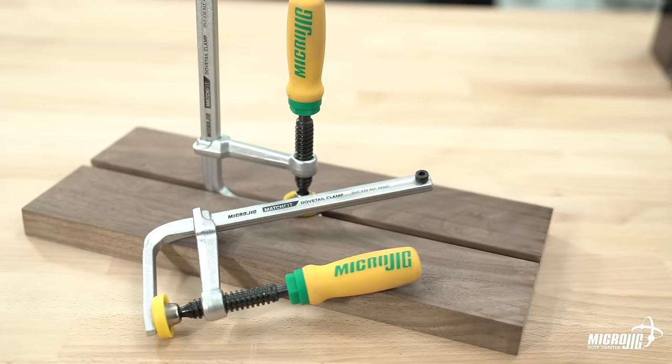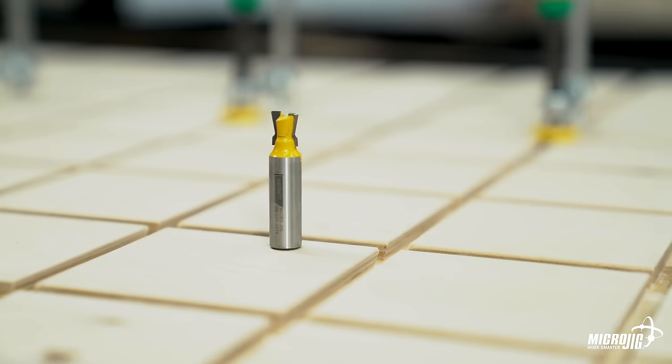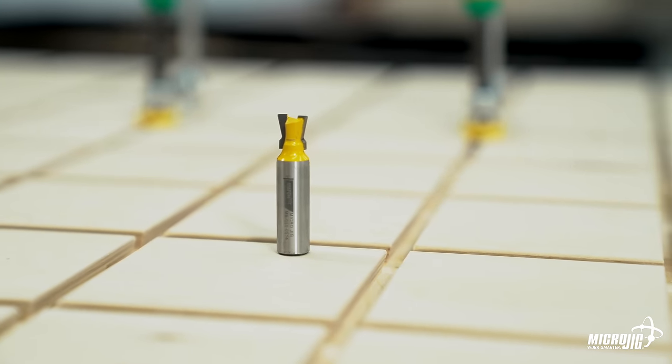It includes two dovetail clamps, a setup gauge, the all-new dovetail hardware variety pack, and the specially designed Matchfit dovetail router bit with built-in round overs for cleaner cuts and less sanding.